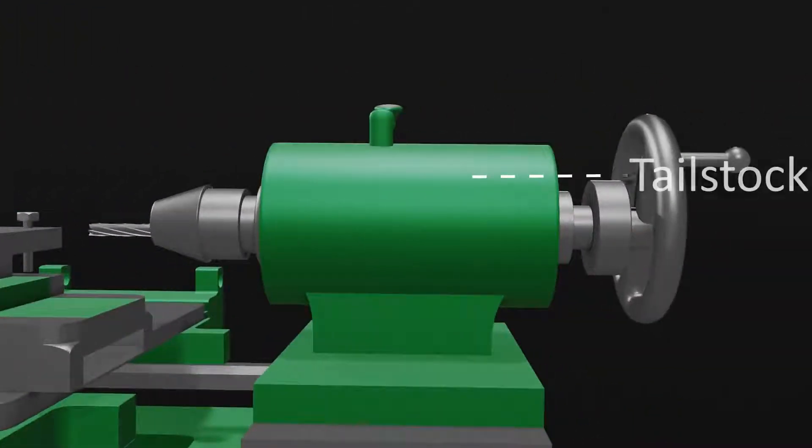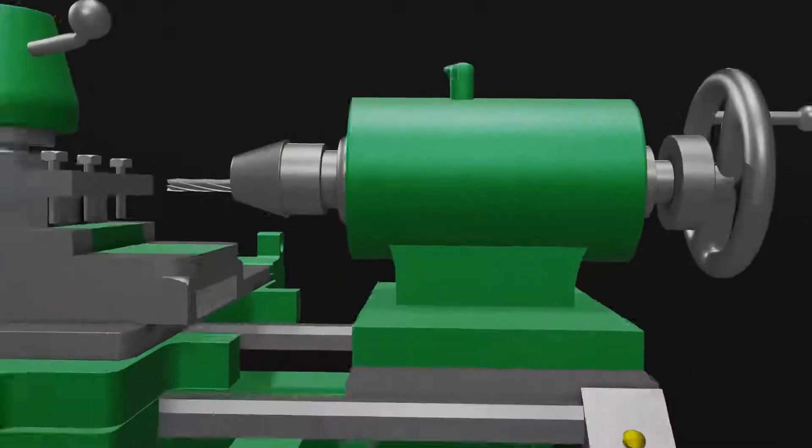Tailstock. Tailstock is the counterpart of the headstock which contains a non-rotating barrel that can slide in and out directly in line with headstock spindle parallel to the axis of the bed.